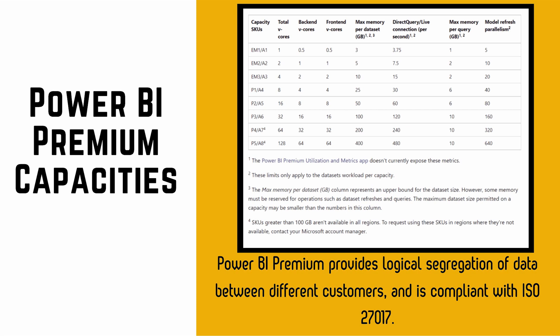Power BI Premium offers different capacity SKUs: P1, P2, P3, P4, and P5. Also, note that in the future all P capacities will convert to F SKUs — stock keeping units — and every organization will need to obtain them through Azure services. You will need an Azure subscription, and this transition is expected from 2025 onwards. As of now, existing P SKUs continue to work as-is.